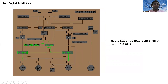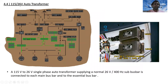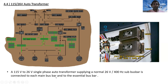The AC essential shed bus is supplied by the AC essential bus. For the 115/26 volt auto transformers: a 115 to 26 volt single-phase auto transformer supplying a 26 volt, 400 hertz sub-bus bar is connected to each main bus bar and to the essential bus bar — connected to AC bus one, AC bus two, and the AC essential bus bar.